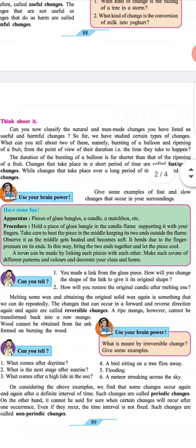Use your brain power: Give some examples of fast and slow changes that occur in your surroundings.